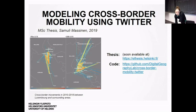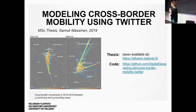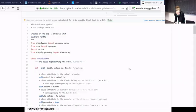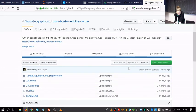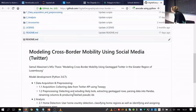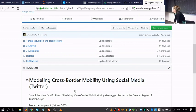Another example is Samuli Massinen's thesis, inspected two weeks ago, which used Twitter data from the greater Luxembourg region to look at cross-border mobilities of people. There were millions of tweets by thousands of users, and he developed an algorithm to detect commuting patterns on a daily or weekly basis. The codes are online on our GitHub page, using similar approaches we're learning here — LineStrings, iterating, grouping data.